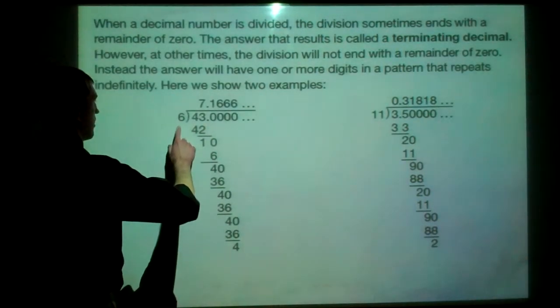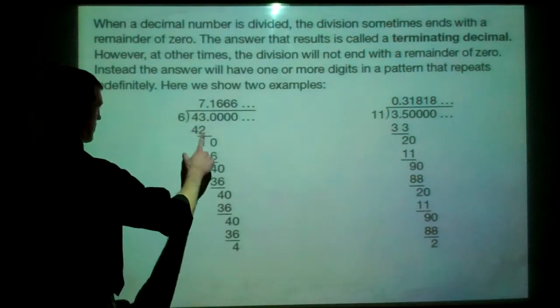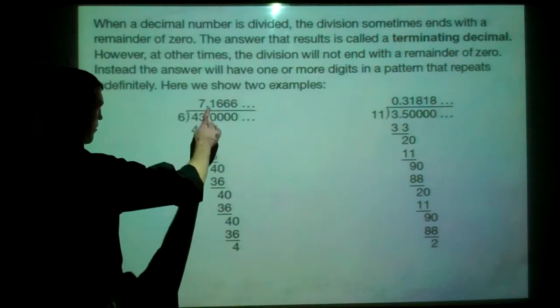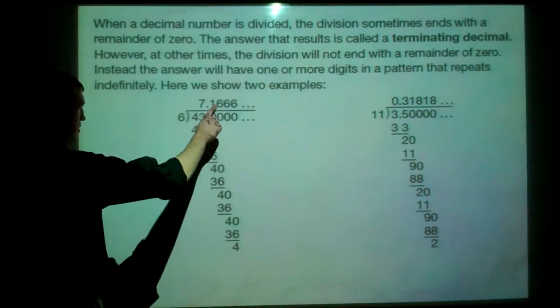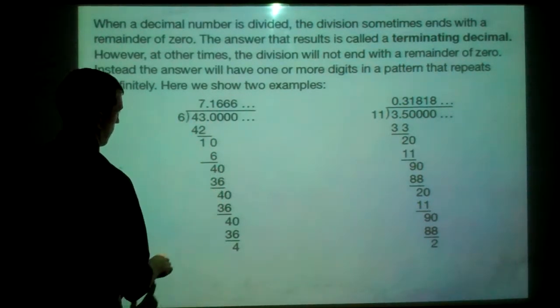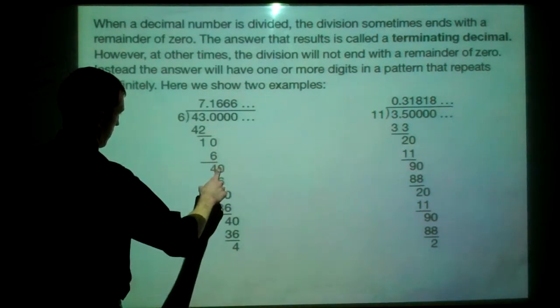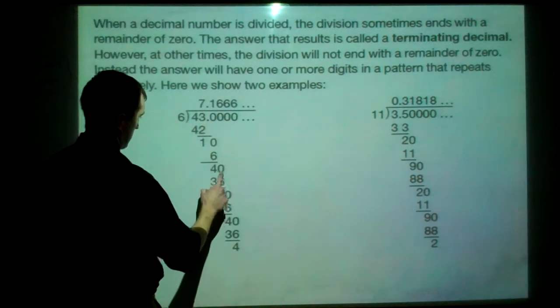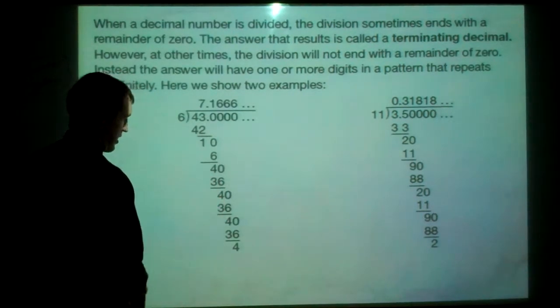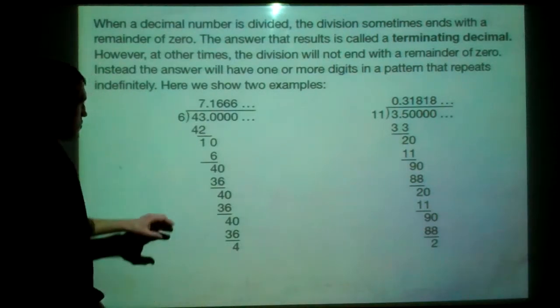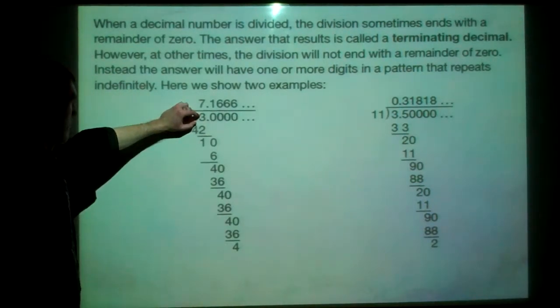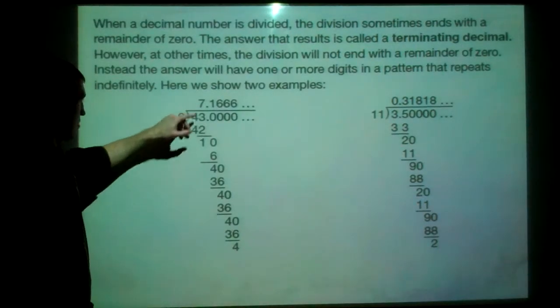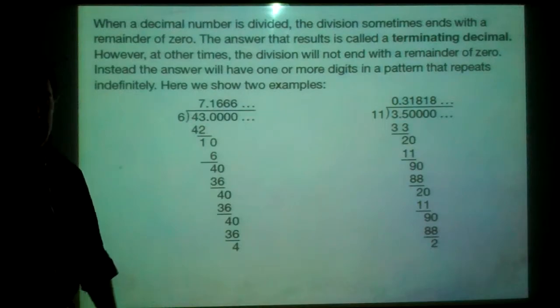We get 6 goes into 43, 7 times. 7 times 6 is 42. Subtract 42 from 43, you get a 1. And we drop down our zero, put our decimal up here. Now 6 goes into 10 once. 1 times 6 is 6. And we get 10 minus 6 is 4. Drop the zero down and we get 40. 6 goes into 40, 6 times. 6 times 6 is 36. Subtract these two, we get a 4 again. And you can see we're going to keep getting 40s and 36s as we go. So this pattern that we have here is 6s. The 6s will keep repeating. They will go on indefinitely. They will go on forever. So 7.16 and then the 6 repeats forever.